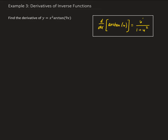Let's recall the derivative of f times g with respect to x. We're going to have f times g prime plus g times f prime. We can call the first part f, and the second part g.